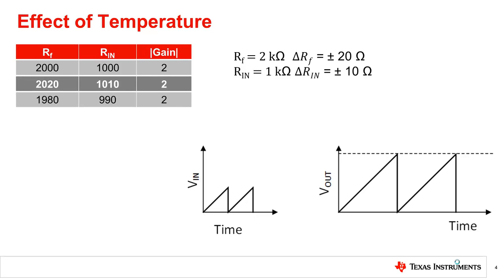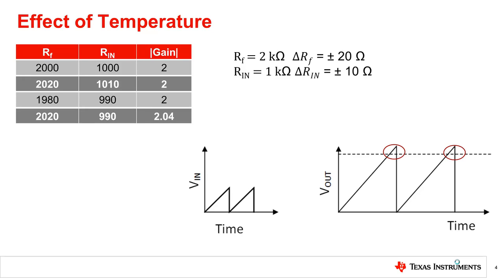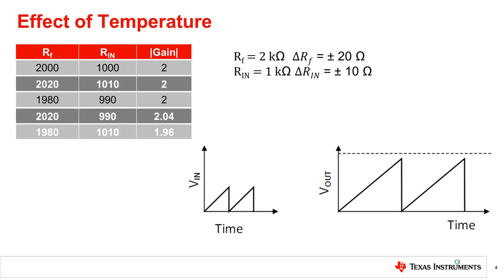However, if the drift is not the same, the results are quite different. If RF has a positive drift and RN has a negative drift, the gain of the circuit changes from 2 to 2.04. This causes the output signal to cross the maximum signal level, resulting in clipping and introducing harmonic distortion into the output. If RF has a negative drift and RN has a positive drift, the gain of the circuit changes from 2 to 1.96, causing the output signal amplification to reduce with the rise of temperature.